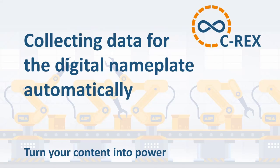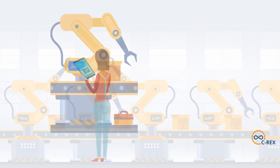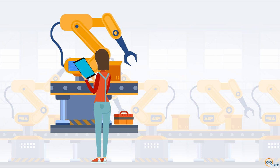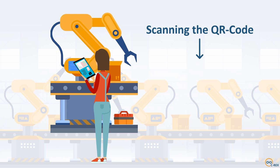Welcome to the sirex.net explanatory videos. Let's talk once again about the digital nameplate and how we can take care of collecting the product information for you. A QR code is located on the nameplate of the product. By scanning the code with a smartphone or tablet, users are taken to the digital image of the product information — the digital nameplate.